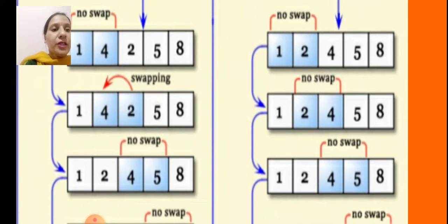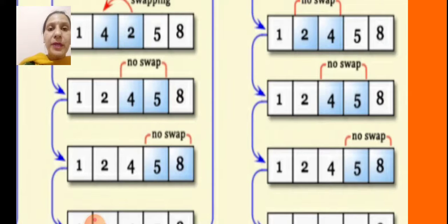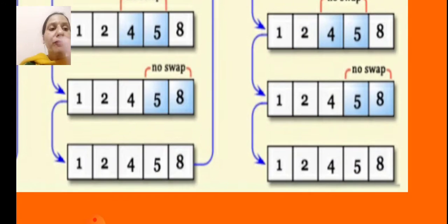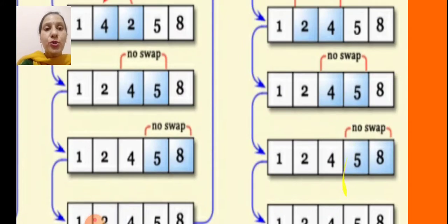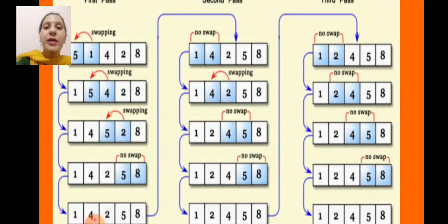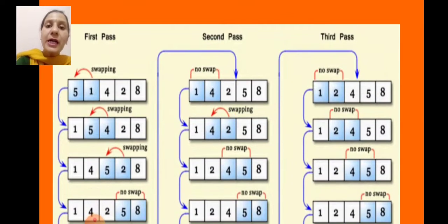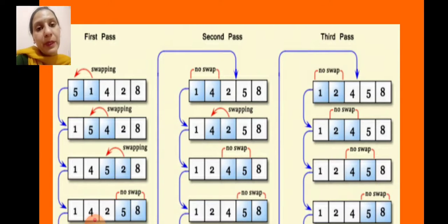We move to the third pass. We compare 2 and 4 — since 2 is smaller than 4, no swapping. Then we compare 4 and 5 — since 4 is smaller than 5, no swapping. Then we compare 5 and 8 — again, no swapping. So at last we have a sorted list: 1, 2, 4, 5, 8. In this way, we sort the list by using bubble sort — we compare adjacent elements, then sort and swap them. This is our bubble sort technique.